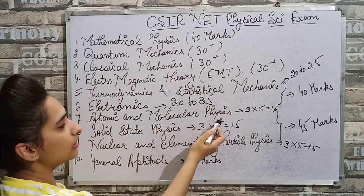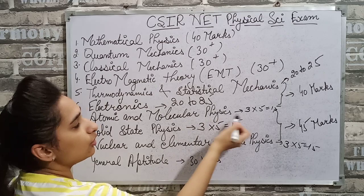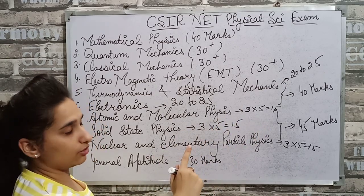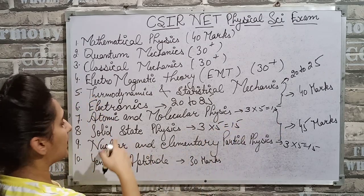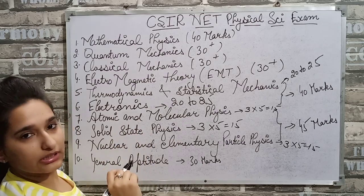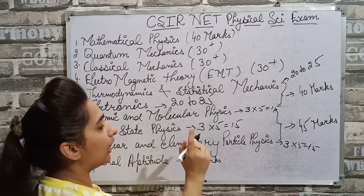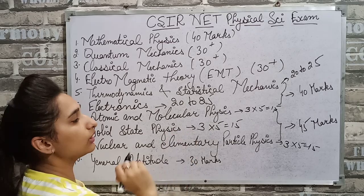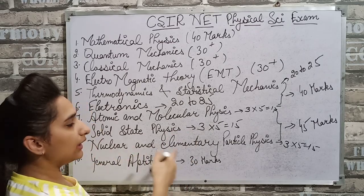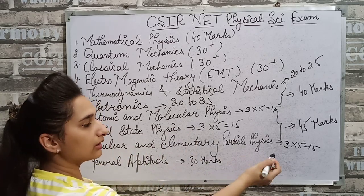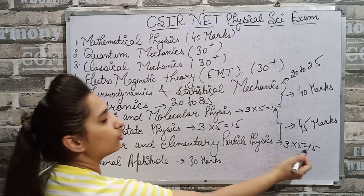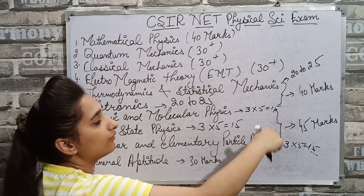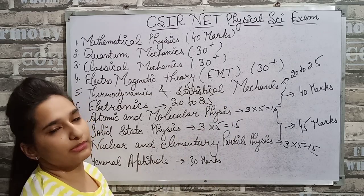For Atomic and Molecular Physics, there are three questions and every question is 5 marks, so the total is 15 marks. There are three questions in Solid State Physics and every question is 5 marks, so the total is 15. There are three questions in Nuclear and Elementary Particle Physics and every question is 5 marks, so the total is 15. If we total these three, it comes to 45 marks.